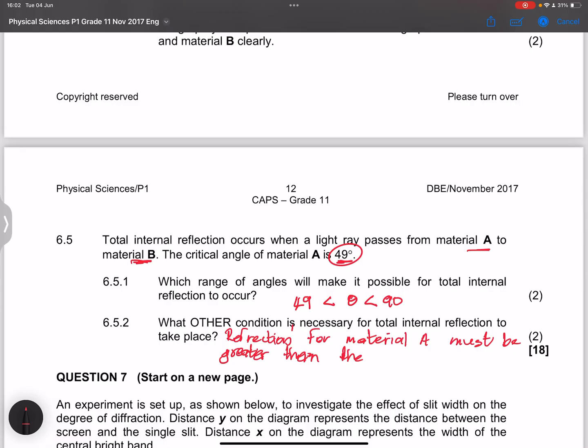the refractive index for material B. So that would be the condition there. In order for total internal reflection to take place.